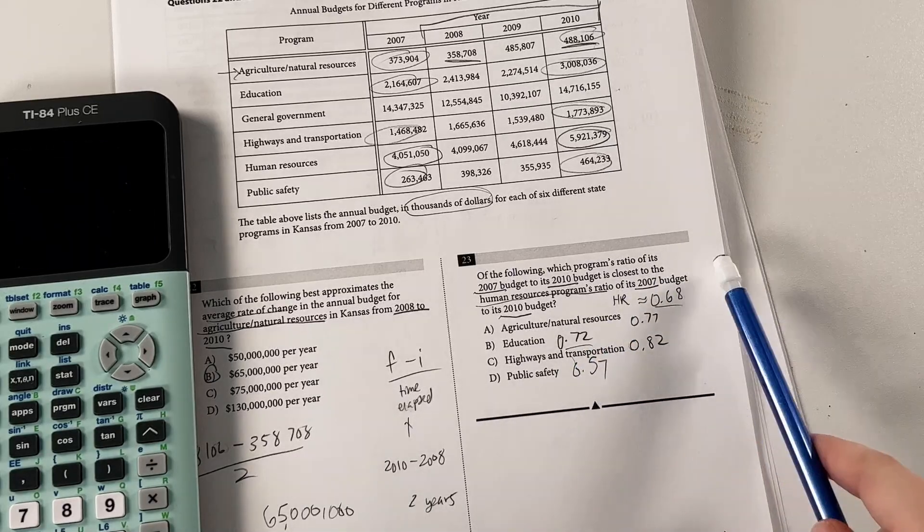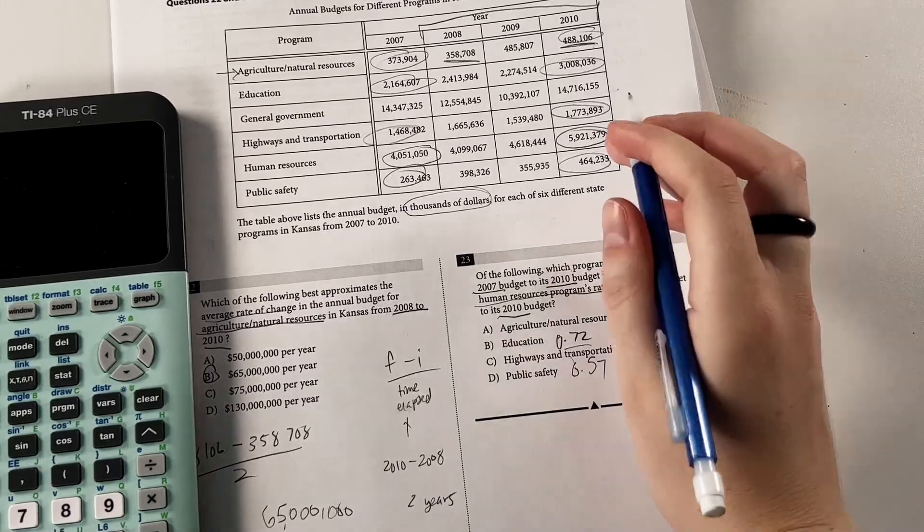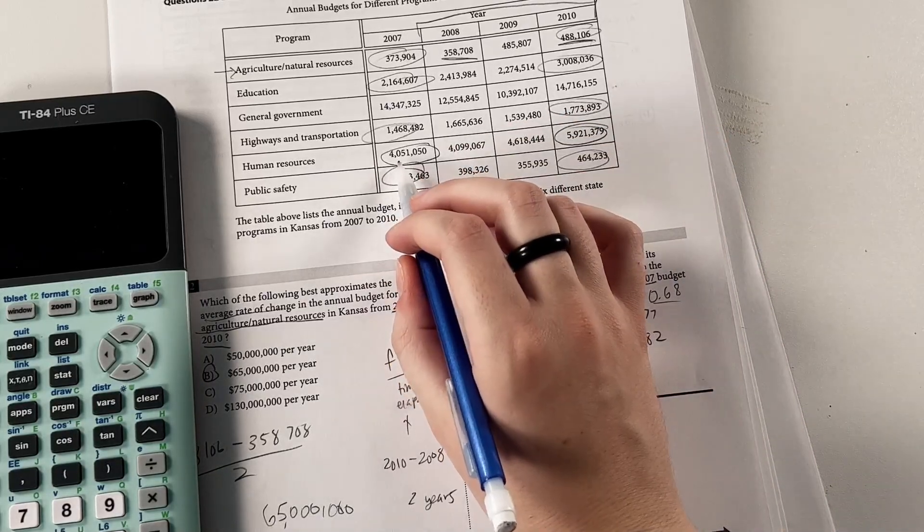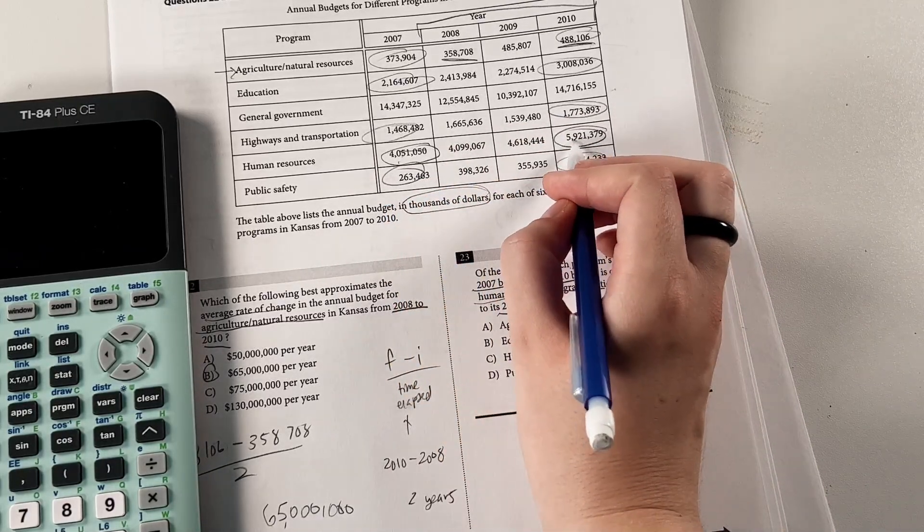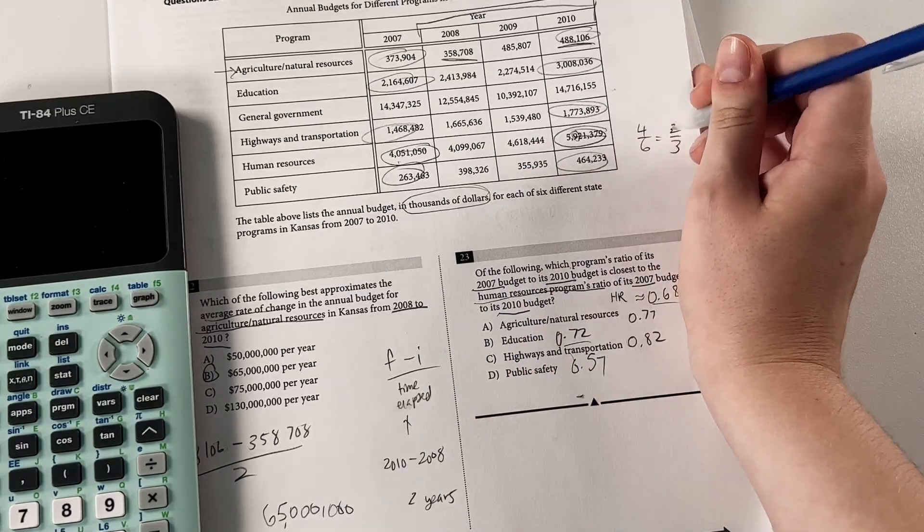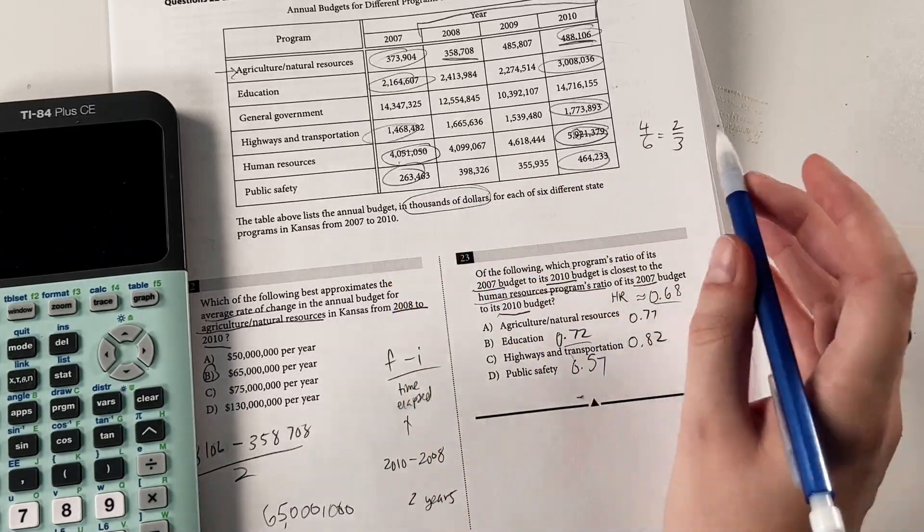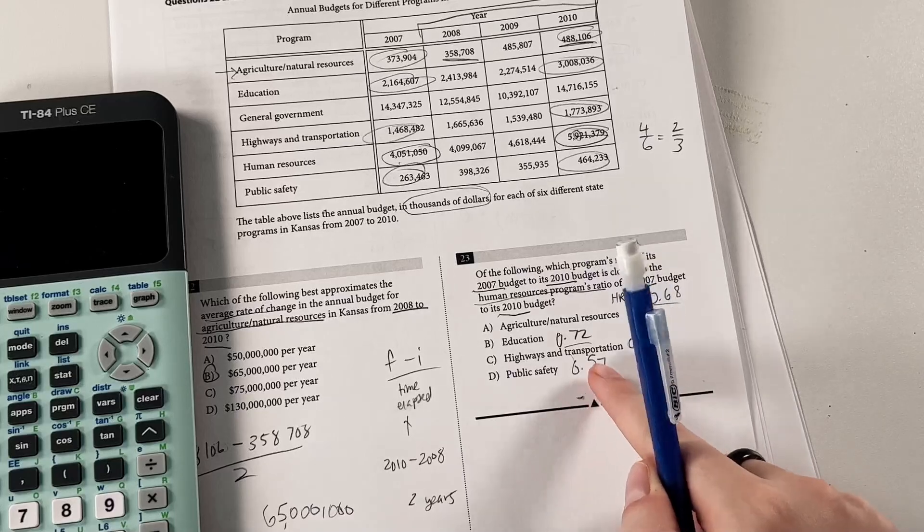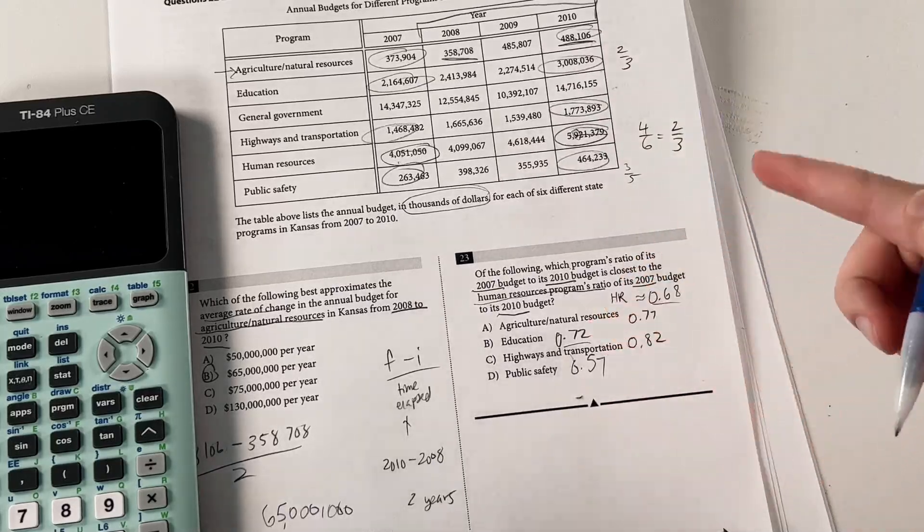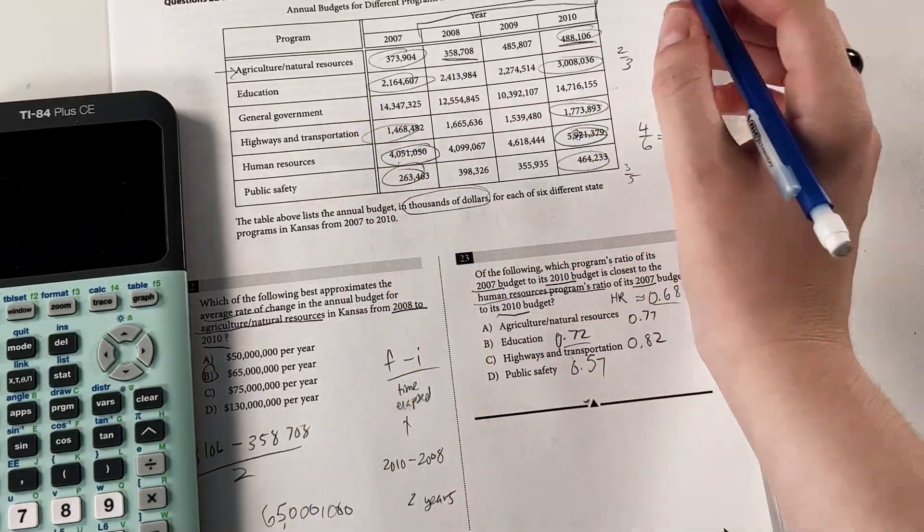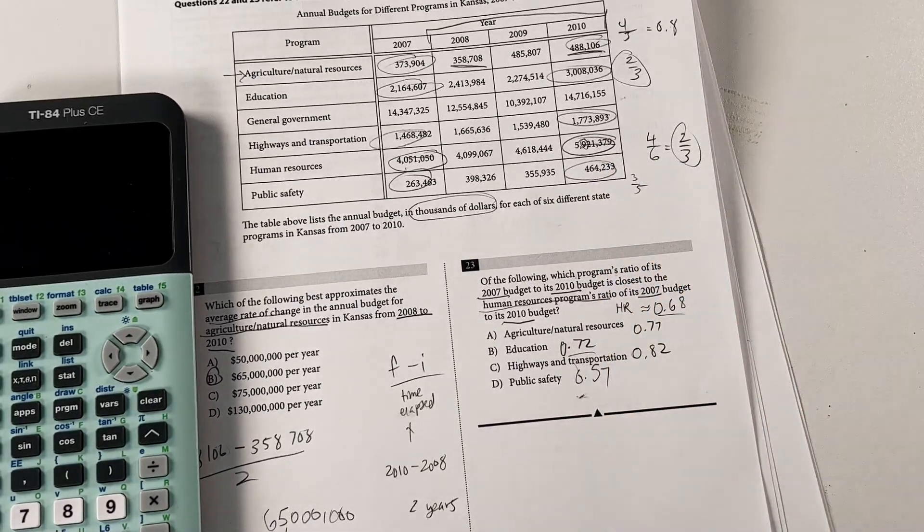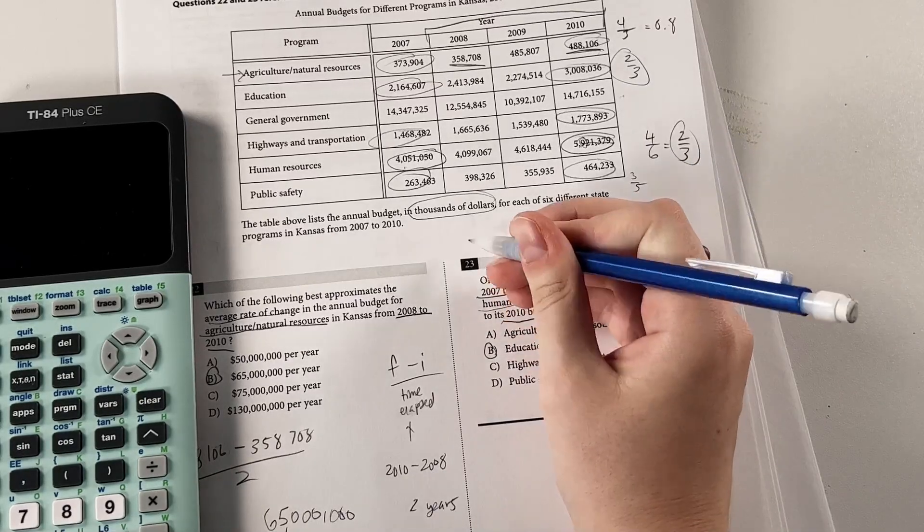Another simpler way to do these is just to take the pure estimates. So for our HR budget, we can just do 4 over 6. Because we don't really care about any- this is a lot of sig figs for no reason. So we take 4 over 6 for human resources. That's about two-thirds. Then, all the rest of these- public safety is going to be close to three-fifths, or about 0.6, which is pretty close to that. Education is going to be two-thirds, which makes sense because that's the one we said was the closest. And agricultural/natural resources is going to be 4 over 5, which is 0.8. So yeah, these two definitely match up the closest, especially if you do the little estimation like this. So I'd say that's our answer.